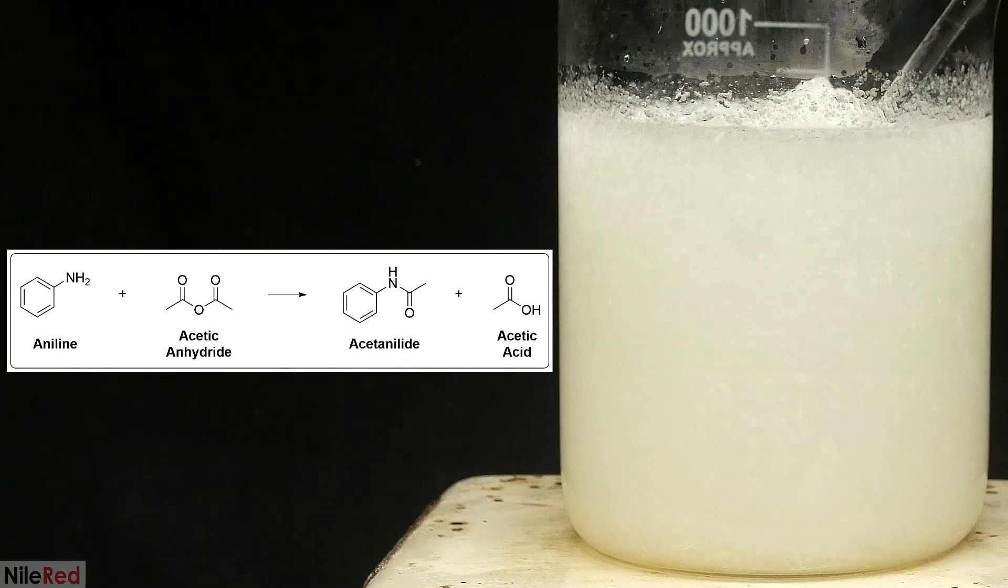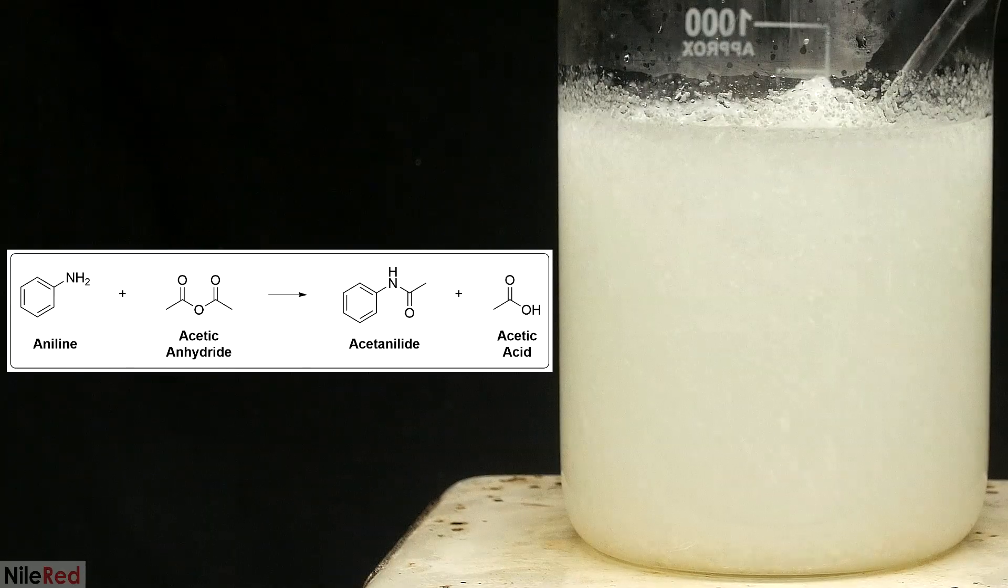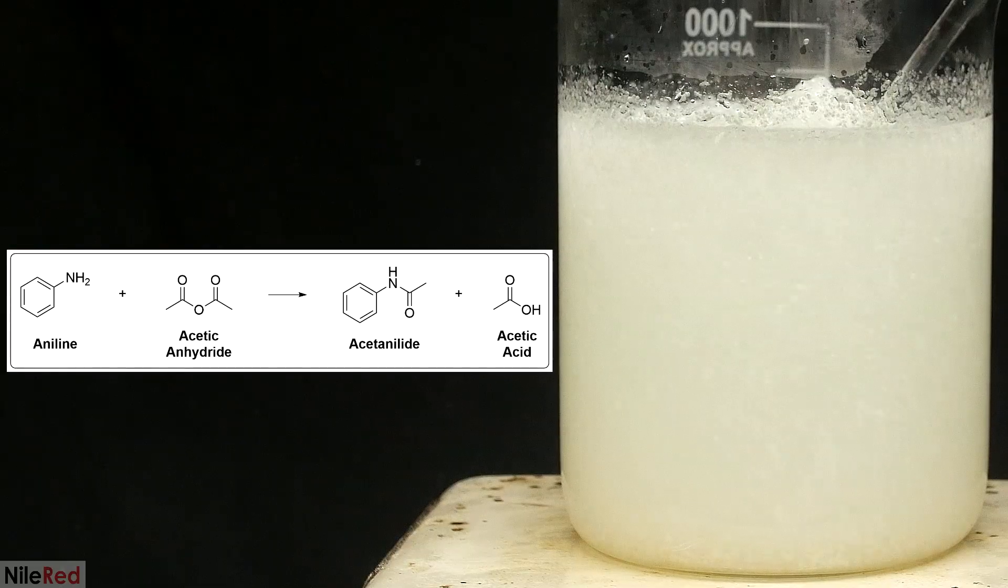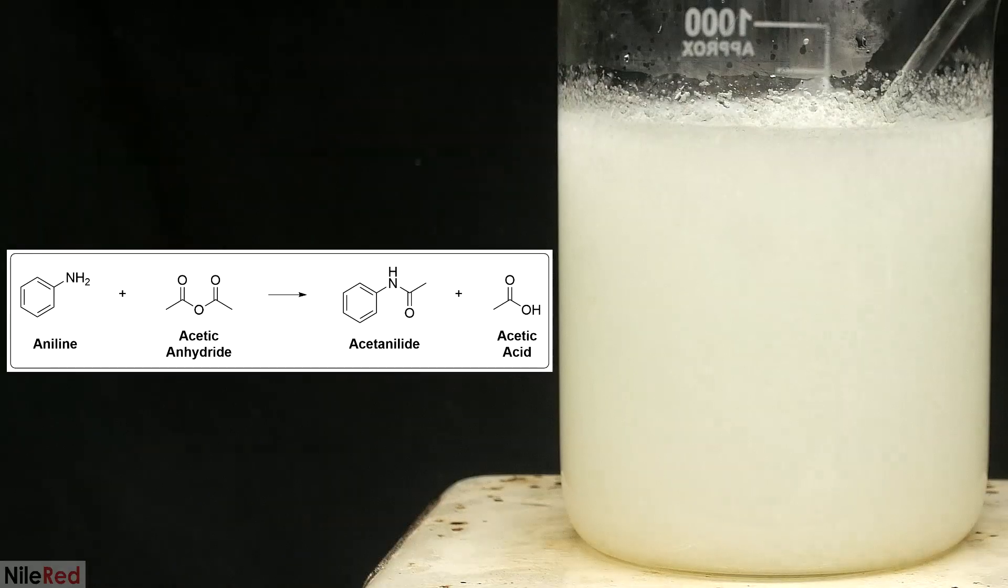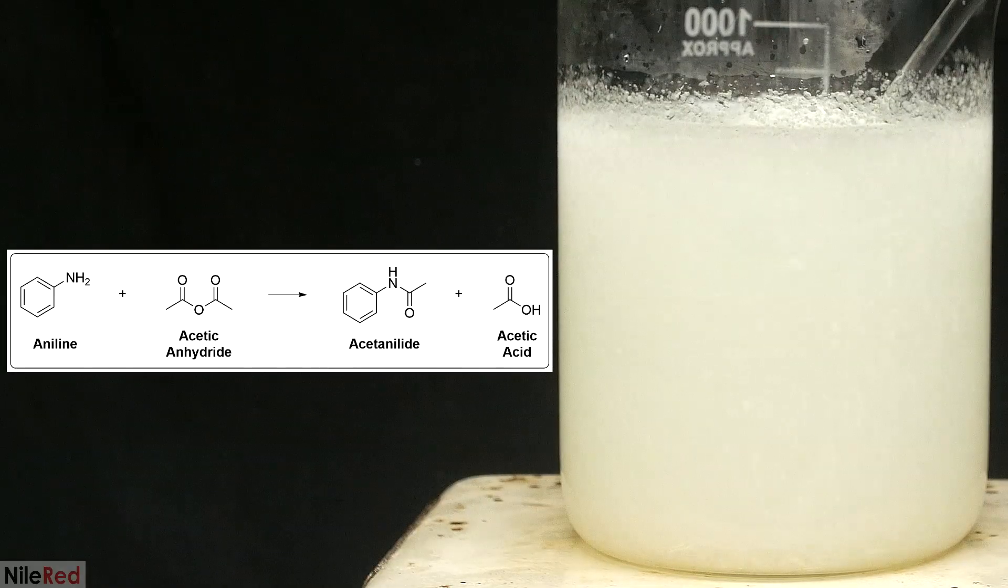When the aniline is free, it quickly reacts with the acetic anhydride to form acetanilide, which is insoluble in water and precipitates out. This reaction is a good example of how equilibriums can be manipulated. Even though only a small amount of aniline is present at any time, it's immediately picked up and sequestered. The equilibrium keeps trying to establish balance by making more aniline, but it just keeps getting picked up. Eventually, all of the aniline hydrochloride is converted back to aniline and the reaction is pushed to completion.